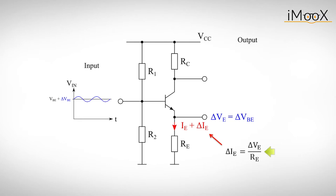which can be expressed as the alternating emitter voltage, delta VE, divided by the emitter resistor. Since the AC voltages at the base and the emitter are the same, we conclude that delta IE is delta VBE divided by the resistance RE.